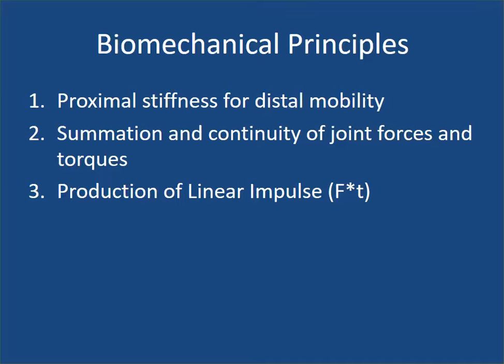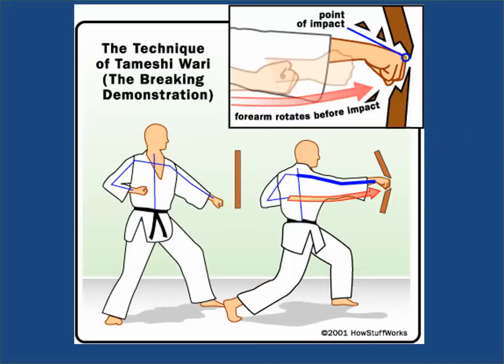You need to consider the summation or continuity or coordination of your joint forces and torques. Many times you want to produce linear impulse — this could be a purpose of the motion. Take breaking a board: you're starting from your feet, generating momentum all the way up, with extra pronation right before impact which maximizes the momentum. You want to maximize the impulse on that board.